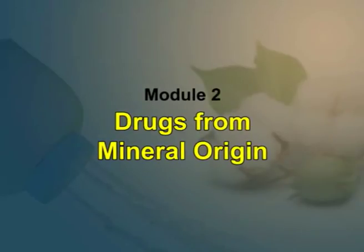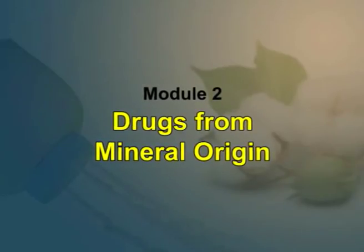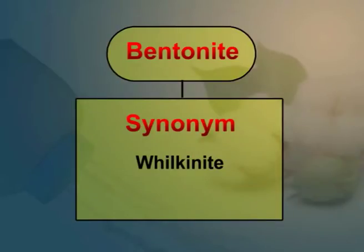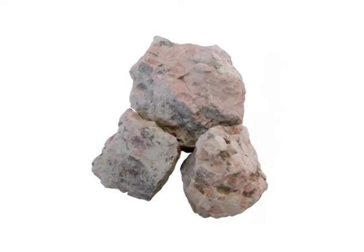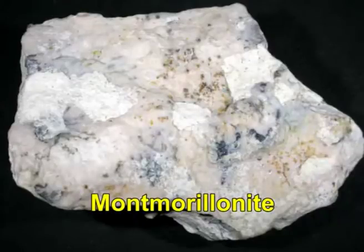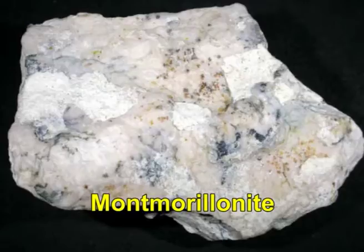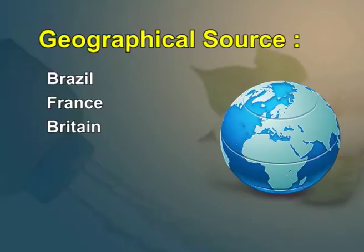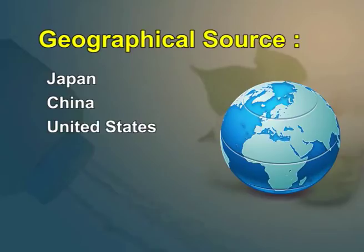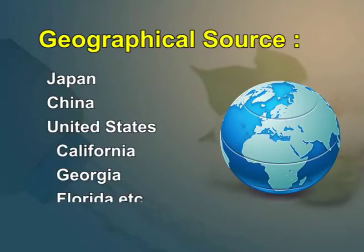Module 2. In this session, we will learn some drugs from mineral origin. First is bentonite. Synonyms: it is also known as wikinite. Source: bentonites are clays composed of very fine particles derived usually from volcanic ash. It is chiefly composed of hydrous magnesium, calcium, aluminium silicate called montmorillonite. Geographical source: it is found in Brazil, France, Britain, Germany, India, Australia, Japan, China and in US states like California, Georgia, Florida, etc. Bentonite is official in the pharmacopoeia of California.